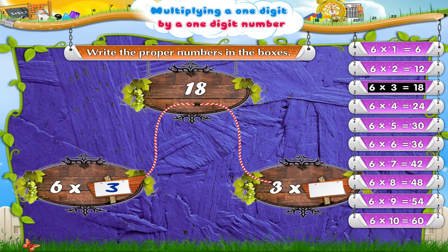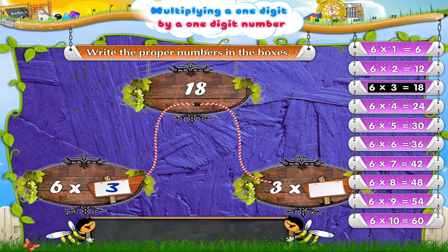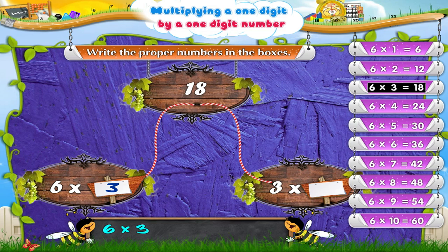But Starry, I hope you remember that we get the same product when the multiplier and multiplicand change places. So six times three equals three times six is equal to 18. Hence the number in our next box should be six. Wasn't that easy?